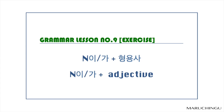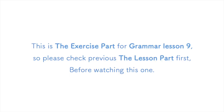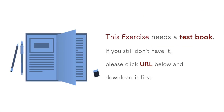Grammar Lesson No. 9 Exercise: 이가 형용사. This is the exercise part for grammar lesson 9. Please check the previous lesson part first before watching this one. This exercise needs a textbook. If you still don't have it, please click the URL below and download it first.